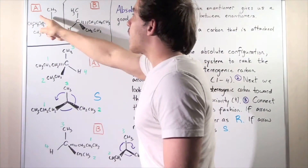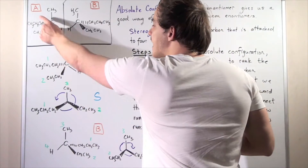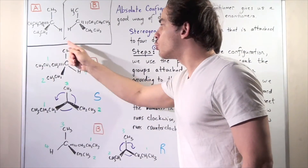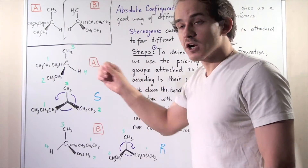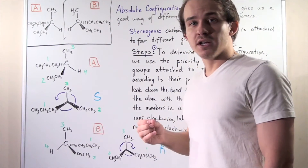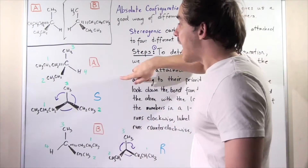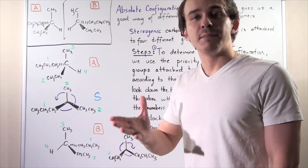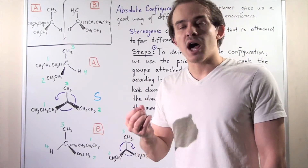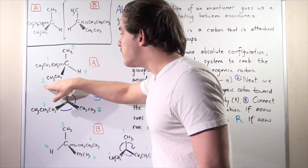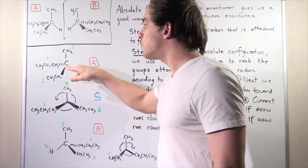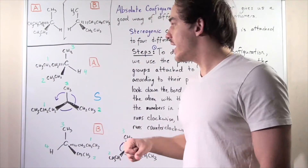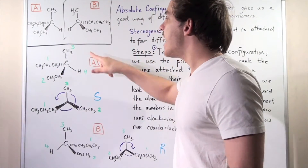Let's begin with enantiomer A. According to step one, we have to prioritize and label our four groups from one to four. Our H will have the lowest priority — number four — because it has the lowest atomic number. We're following the Cahn-Ingold-Prelog priority system. The ethyl gets number two, the propyl gets number one, and the methyl gets number three, because propyl has the highest molecular weight, ethyl the second highest, and methyl the third.